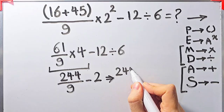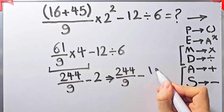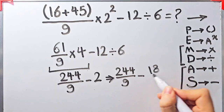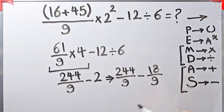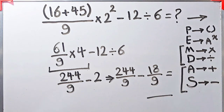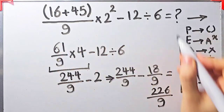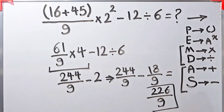Since the denominator of this fraction is 9, we can write 2 as 18 over 9. Now we have 244 over 9 minus 18 over 9, which equals 226 over 9. The final answer of this question equals 226 over 9. Thanks for watching guys — to see more math videos, subscribe to the channel.